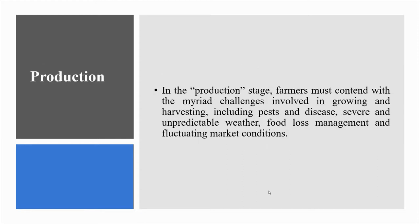In the production stage, farmers must contend with the myriad challenges involved in growing and harvesting, including pests and disease, severe and unpredictable weather, food loss management, and fluctuating market conditions. Under current projections, 60% more food will be needed by 2050. Yet current production efforts are falling short of this target and global hunger levels are on the rise again after decades of progress. This is in addition to the 2 billion people already suffering from malnutrition globally today.